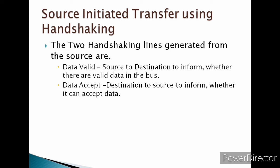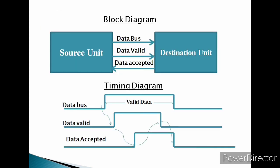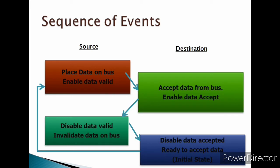The block diagram and timing diagram show the exchange of signals between the two units. The sequence of events shows the four possible states that the system can be in at any given time. The source unit initiates the transfer by placing data on the bus and enabling its data valid signal. The data accept signal is activated by the destination unit after it accepts the data from the bus. The source unit then disables its data valid signal, which invalidates the data on the bus, and the data accept signal is disabled at the destination unit so that the system returns to its initial state.